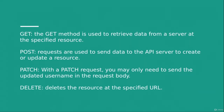A PATCH request is used to update something — for example, changing the timing of a movie booking. A DELETE request is used to cancel or remove an entry. These four requests are very important, and you'll understand their usage better as we go on. Thank you for watching.